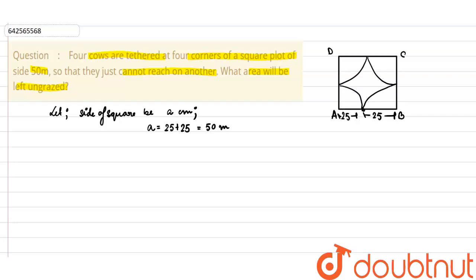Right. It is equal to 50 meter. We know that the side of the square is 50 meter.